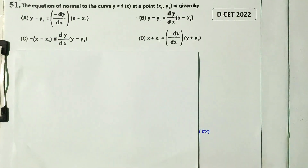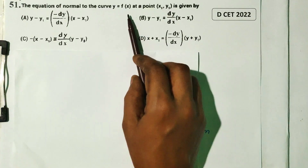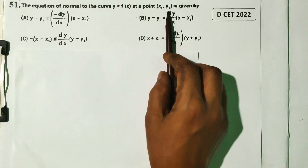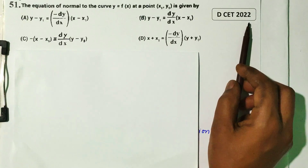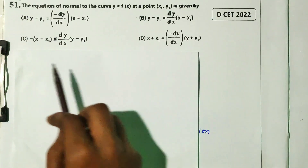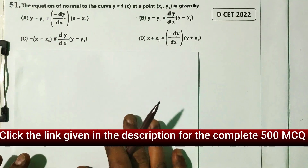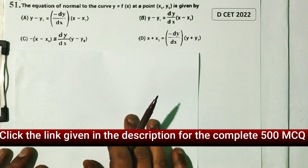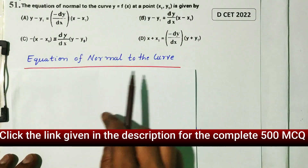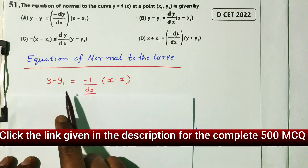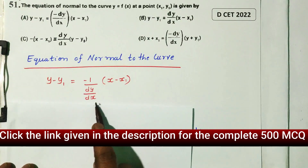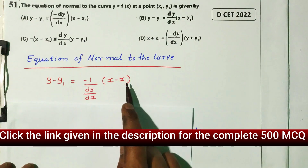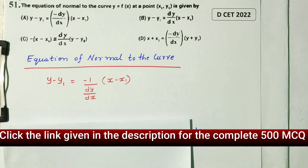Question number 51. The equation of normal to the curve y = f(x) at the point (x', y') is given by the equation. The right answer uses the formula: y minus y' equals minus 1 divided by dy/dx, into x minus x'.